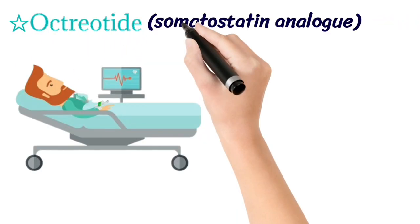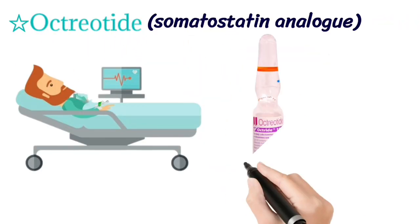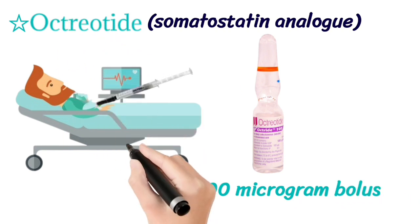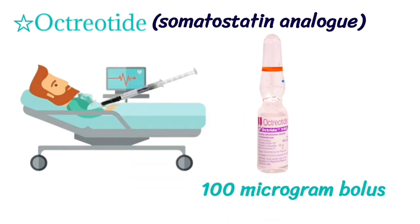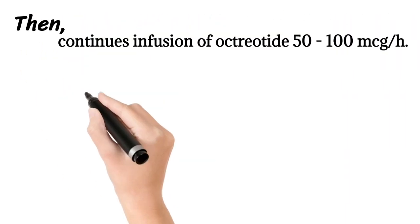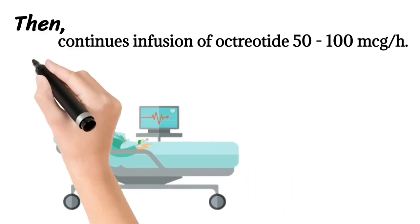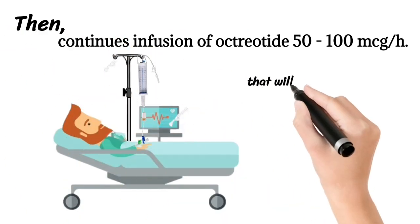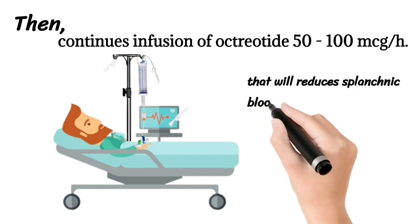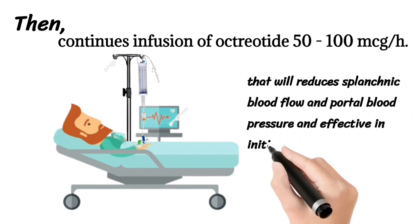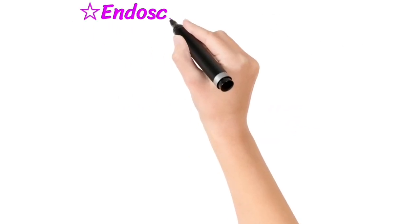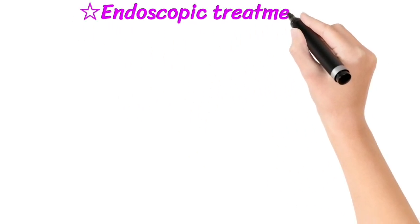Octreotide, which is a somatostatin analogue, is given as a 100 microgram bolus, then continued as an infusion of octreotide at 25 to 100 micrograms per hour. This reduces blood flow and portal blood pressure and provides effective initial control of bleeding related to portal hypertension.